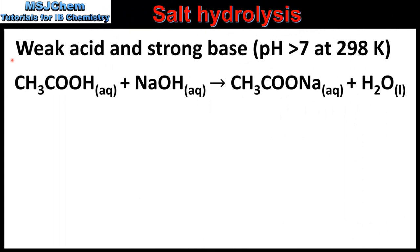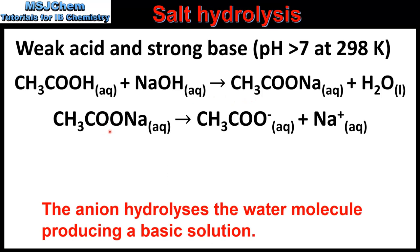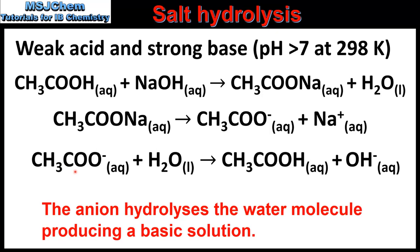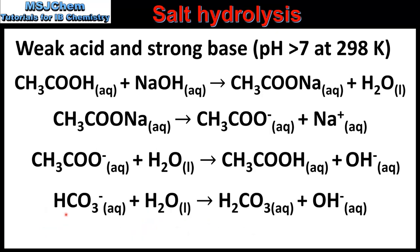Next we look at the reaction between a weak acid and a strong base. Here we have the reaction between ethanoic acid and sodium hydroxide to produce sodium ethanoate and water. Sodium ethanoate dissociates to form ethanoate ions and sodium ions. The ethanoate ion is the conjugate base of a weak acid, therefore it is strong enough to hydrolyse water. This results in the formation of ethanoic acid and hydroxide ions. Due to the presence of excess hydroxide ions, the pH is greater than 7. Another example is the reaction of the hydrogen carbonate ion, which is the conjugate base of carbonic acid. This ion is able to hydrolyse water to produce carbonic acid and hydroxide ions, giving a pH greater than 7. To summarize, the reaction between a weak acid and a strong base produces a basic salt.